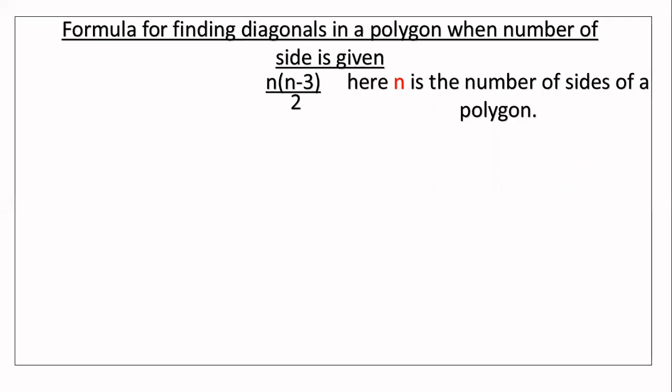Next is the formula for finding diagonals in a polygon when the number of sides is given: n(n − 3) divided by 2, where n is the number of sides of a polygon. We will do a few questions from the textbook.